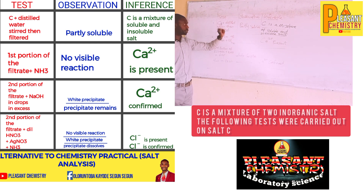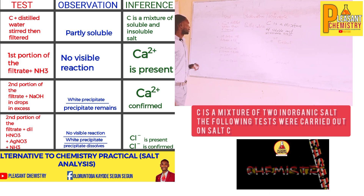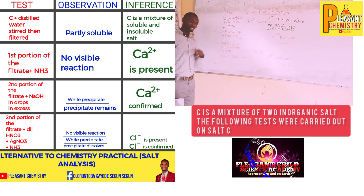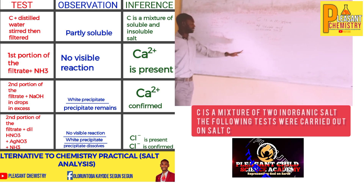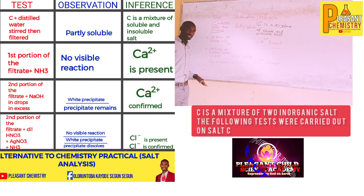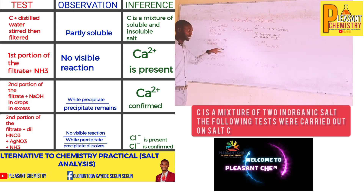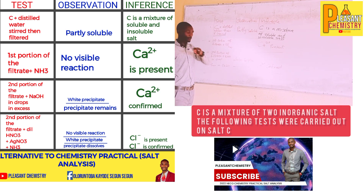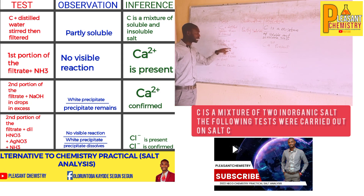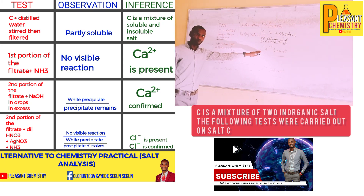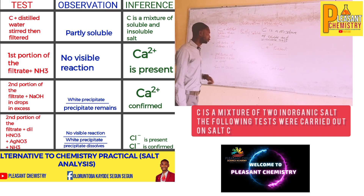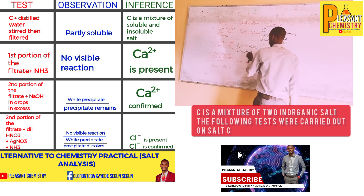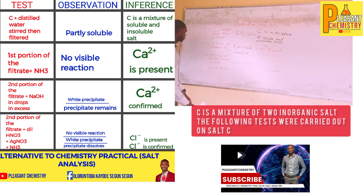The filtrate is passed through the filter paper. The filtrate plus aqueous ammonia — remember, when you have aqueous ammonia and Ca2+ is present in the inference, whenever you are using aqueous ammonia and you have the calcium ion as your inference, there will automatically be no visible reaction. So your observation here will be: no visible reaction.